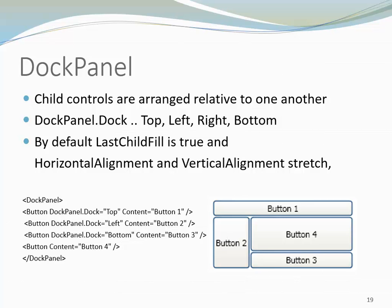Because of that, button 1, which was placed first in the top position, filled the whole width of the window. Button 2 was placed on the left. Notice how it filled the remaining height, but it doesn't reach all the way to the top of the window because that place was already taken by button 1. The third button placed was button 3. It was put at the bottom and filled whatever width was available. The last button added to the Dock Panel was button 4. Because the property Last Child Fill was True, it filled whatever space was left in the window.